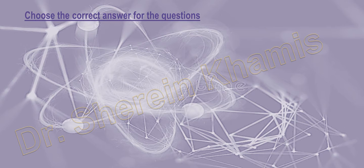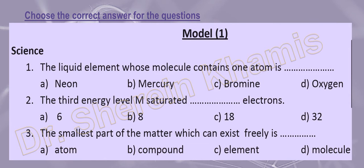Choose the correct answer. All the questions we have are MCQ, or we call them choose questions. We will start with model one. We have here the liquid element whose molecule contains one atom only. We said that we have three kinds of elements. We have elements that consist of one atom and we call it monoatomic element.